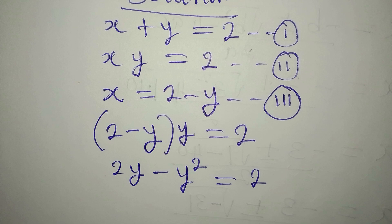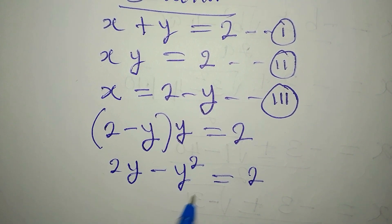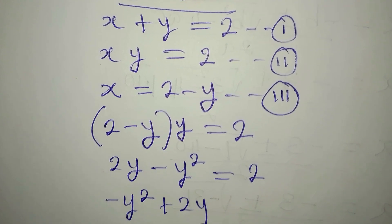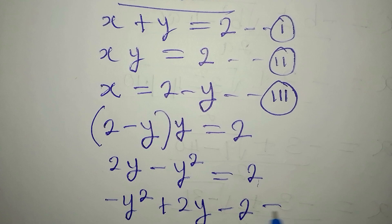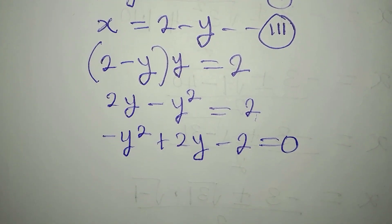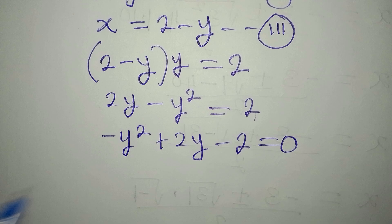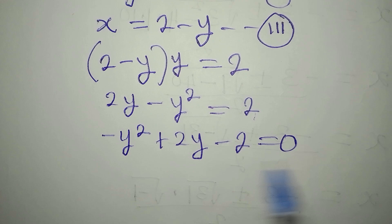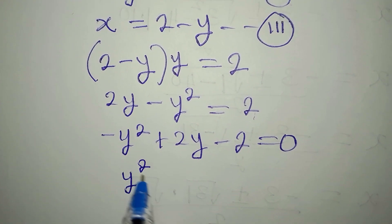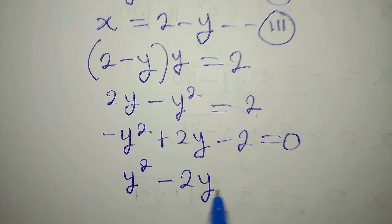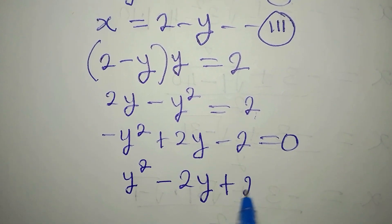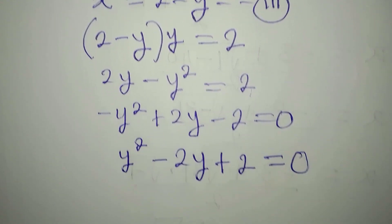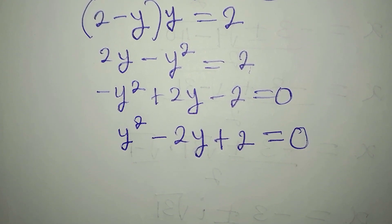Let's rearrange this — the term with the highest power comes first: minus y squared plus 2y minus 2 equals 0. We are not expected to have a negative leading coefficient, so we multiply each term by negative 1. This gives us y squared minus 2y plus 2 equals 0. Now we have a quadratic equation.